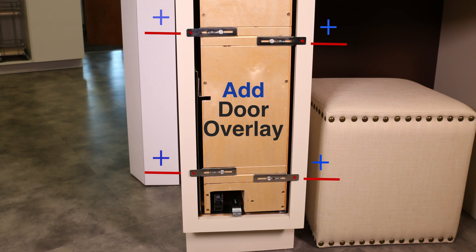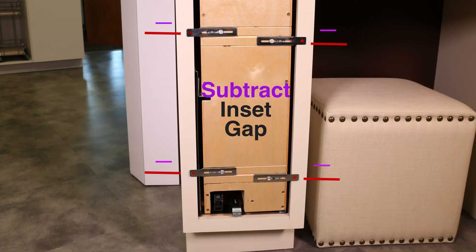In our case, the door is larger than the opening, so we will add the door overlay to each of the slotted hole dimensions. If your door is smaller than the opening, subtract the inset gap from the slotted hole dimensions.